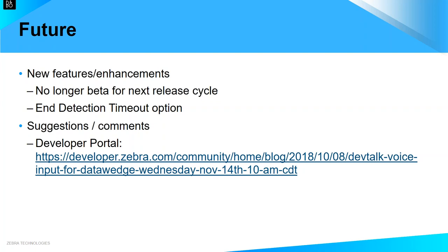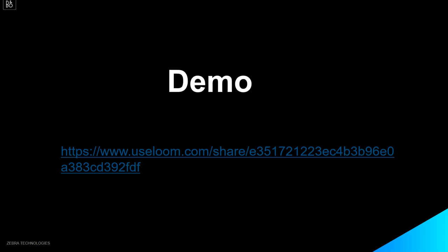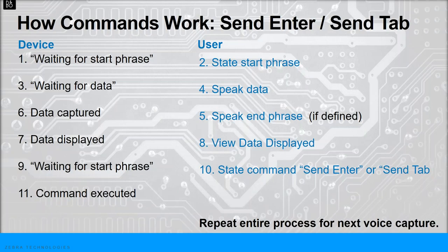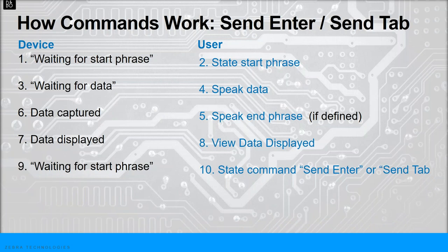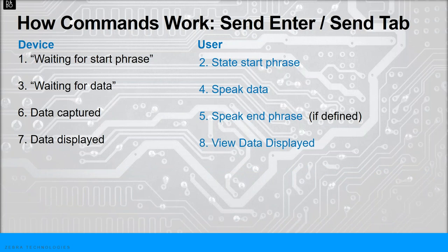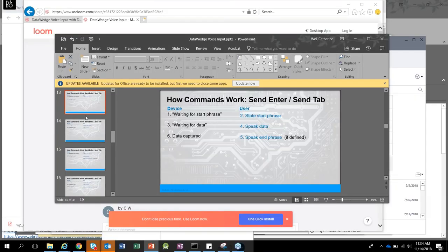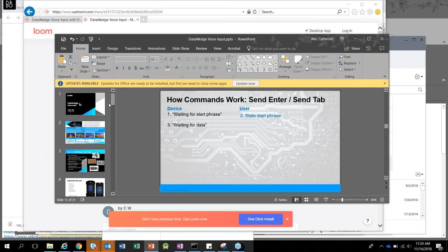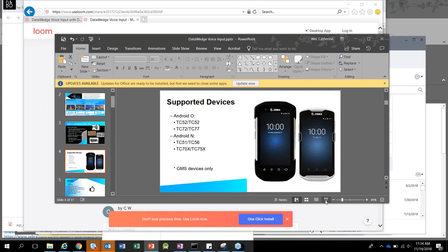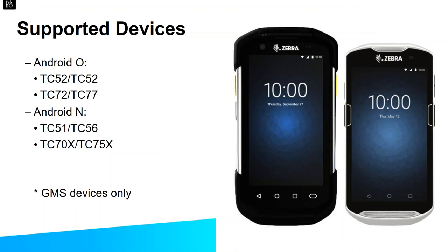Question from Matthew: what version of DataWedge supports voice? Turandu: DataWedge versions 6.9 and 7.0 have this feature, and 7.1 will be released soon — all three versions will have it, on Android O and N GMS devices only.